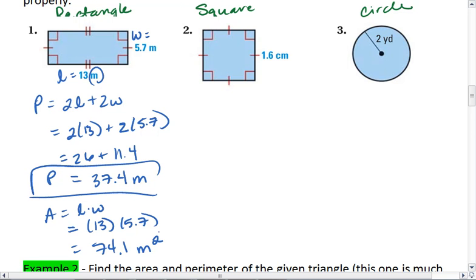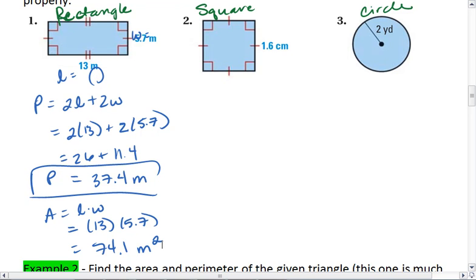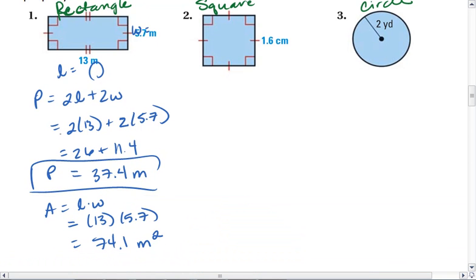and because this is area, it's a squared unit. So my area for my rectangle is 74.1 meters squared. I'm going to label these P sub R for rectangle and area R for rectangle.